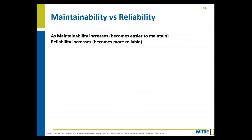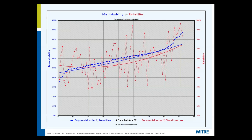We've been talking about maintainability and reliability, but how do they work together? As maintainability increases, does reliability increase? We find that to be a true statement. Looking at the chart, maintainability in blue and reliability in red show a strong correlation: as maintainability increases — our ordered set — reliability increases with it.